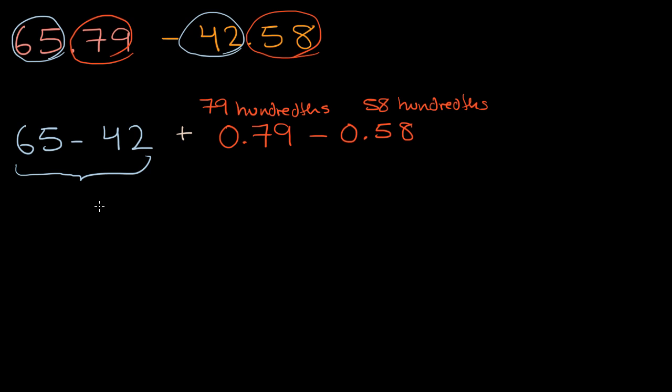And so sixty five minus forty two. Five minus two, in the ones we're going to get three. And then sixty minus forty is equal to twenty. So we have twenty three plus. Now seventy nine hundredths minus fifty eight hundredths. Seventy minus fifty is twenty. And nine minus eight is one. So this is going to be twenty one hundredths, which we can write as zero point two one. Twenty one hundredths.